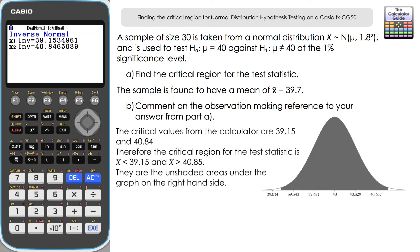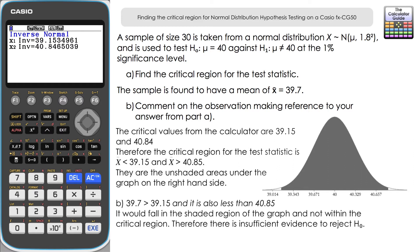For part b, the sample mean is 39.7. Comparing to the critical region: 39.7 is greater than the lower boundary 39.15 and less than the upper boundary 40.85, so it falls within the 99% central region. Therefore there is insufficient evidence to reject H₀, and we accept that μ = 40.